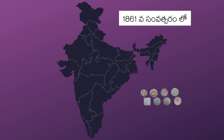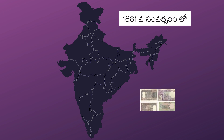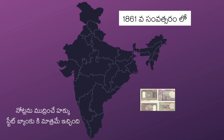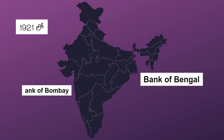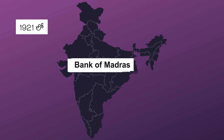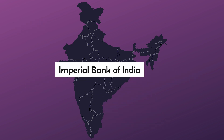One of the main things done was to start paper currency. We will start the paper currency and establish the state bank. In the 19th century, the three banks — Bank of Bengal, Bank of Bombay, and Bank of Madras — were called the Imperial Bank of India.